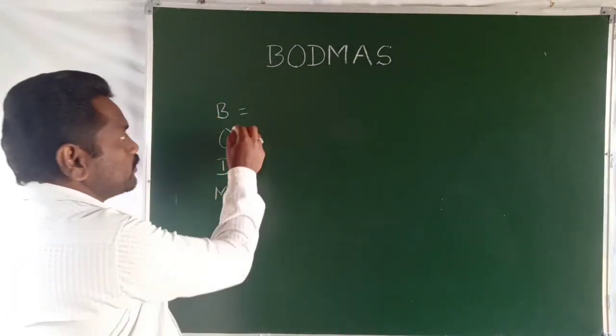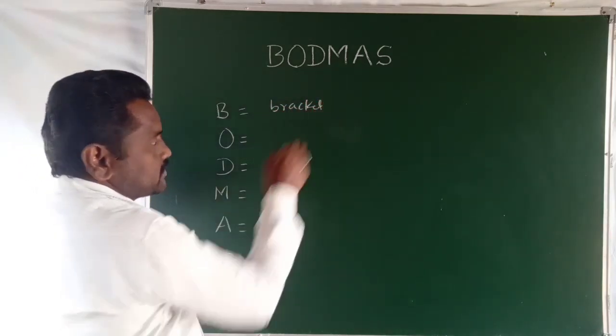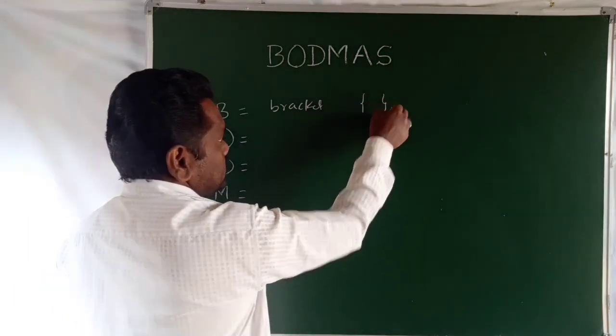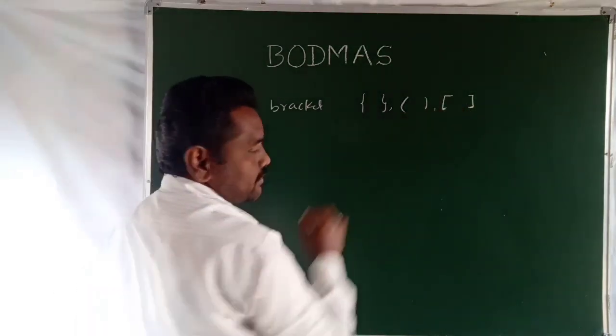B is for bracket. Bracket means there are several types - curly braces, inner set, open or inner set.